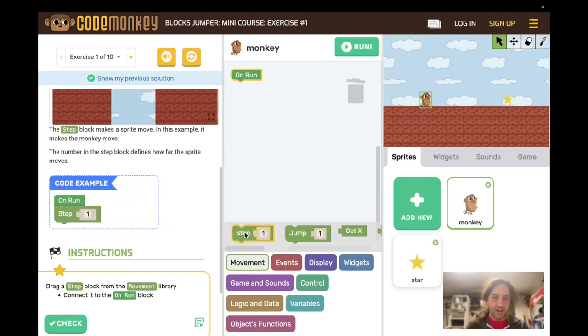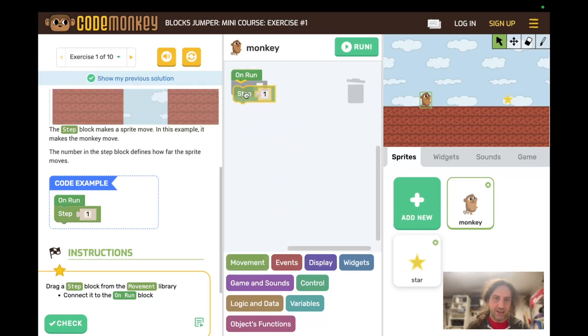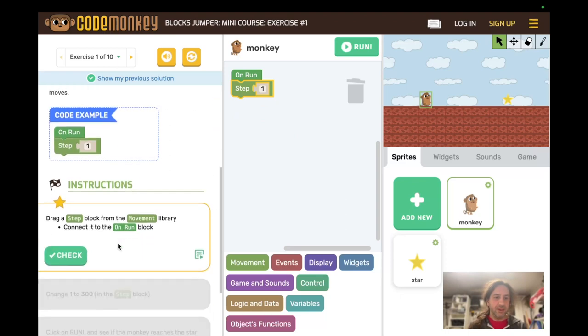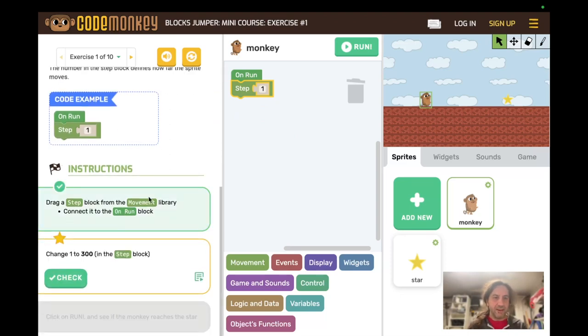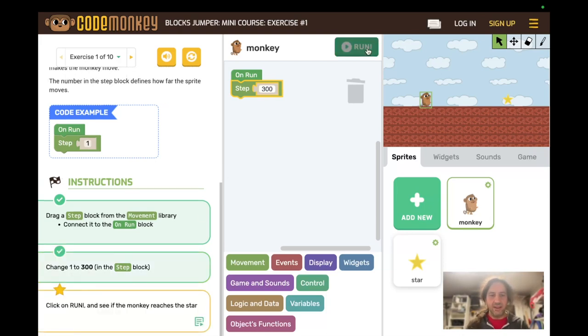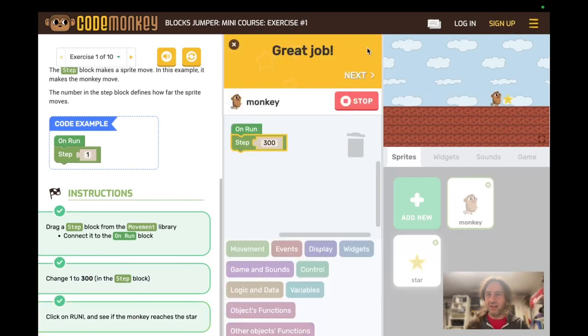So one thing about blocks programming is you know there's a little divot down on this one and then on this block there's a divot down and a divot down you want to lock them together. When you're dragging and close to it it'll snap and you can let go and then we will check and it gives us the next instruction so change one to 300 in the step block.